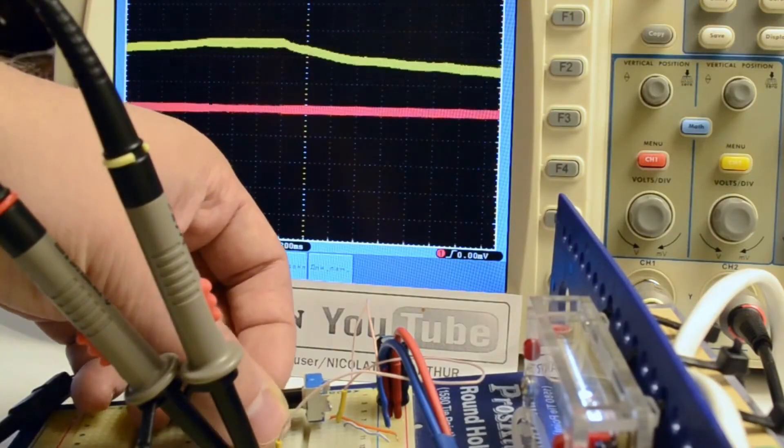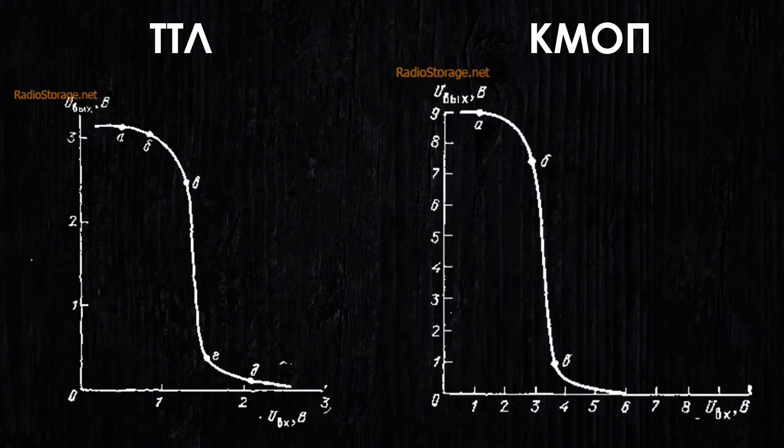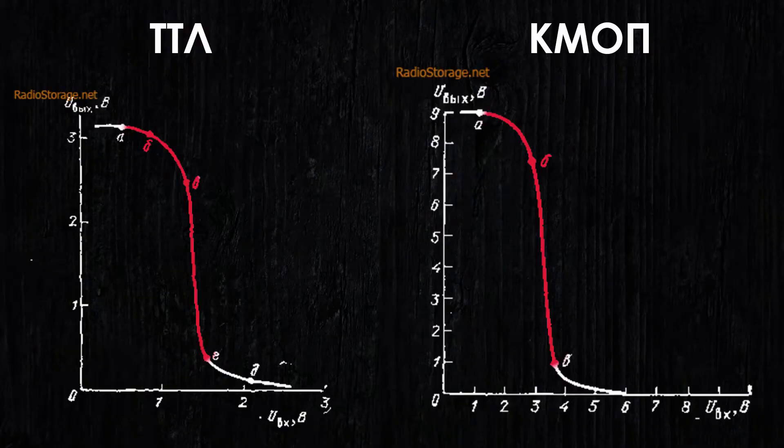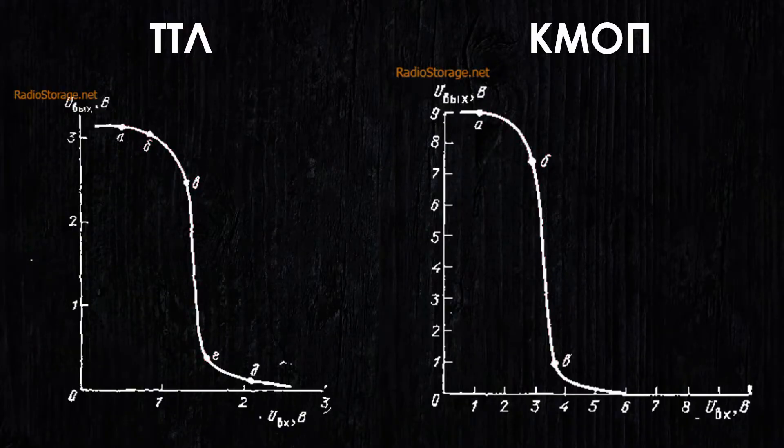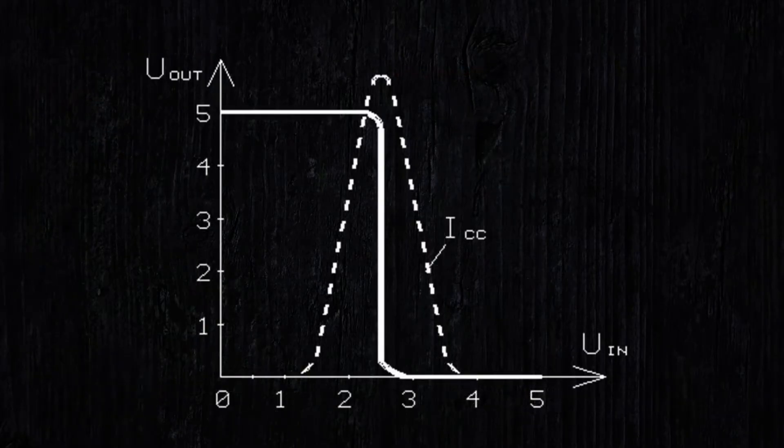In fact, TTL and CMOS inverters have the following transfer characteristics. Besides the saturation and cutoff regions, there is also an amplification region with high steepness. When logic chips are in this region, they consume maximum power and can simply overheat and burn out.